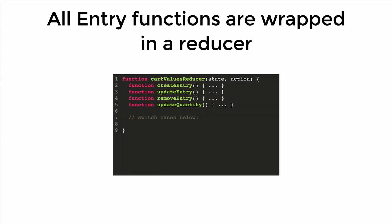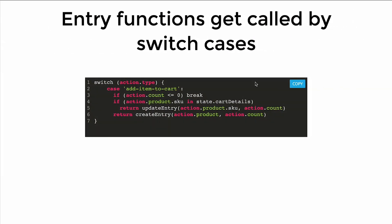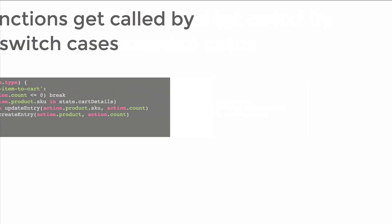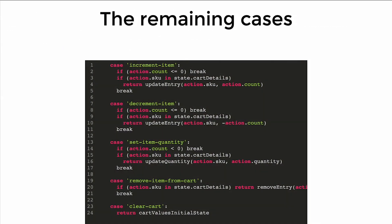All of those functions are helpers that exist within a reducer, and what triggers those functions are cases. I'll show you one case in detail: addItemToCart. If the count is less than or equal to zero, don't do anything. If the object does not exist within the cart state, create the entry; if it does exist, update the entry using updateEntry. The whole pattern is having the reducer with the helper functions in the Entry class, making sure everything is where it needs to be, then calling those entry functions with your switch-case actions.